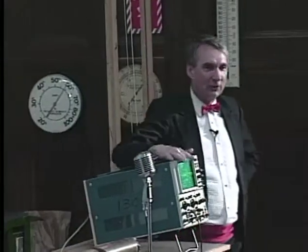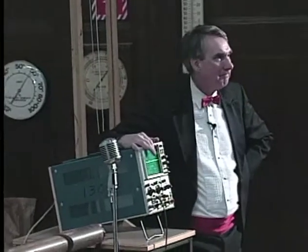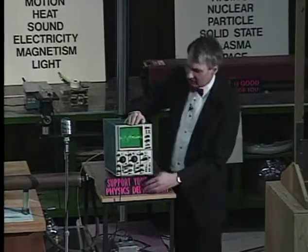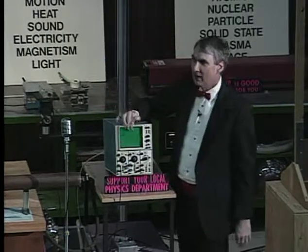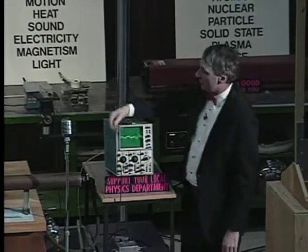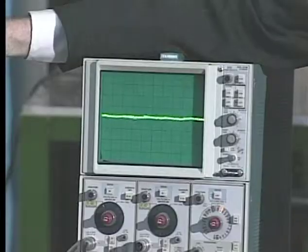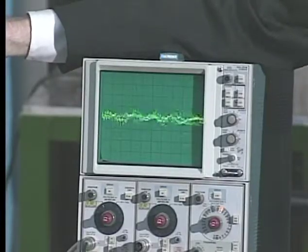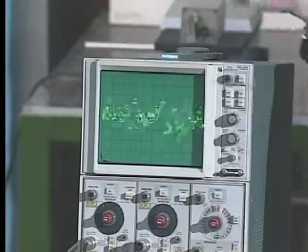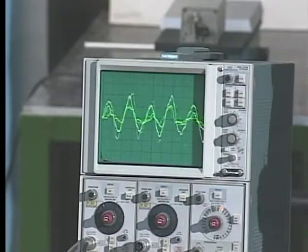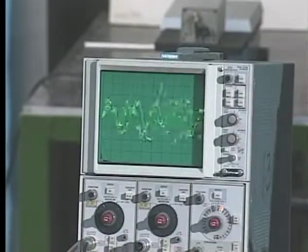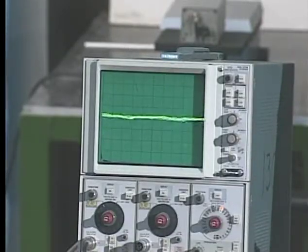In the physics laboratory, we use one of these. What's this called? Oscilloscope. Very good. It's a little like a television set, isn't it? It makes a picture. And this picture is wiggling around in response to my voice. And that's because this oscilloscope is connected to a microphone, and the microphone is amplifying my voice and feeding it into the oscilloscope. You see how complicated the wave that corresponds to human speech is.